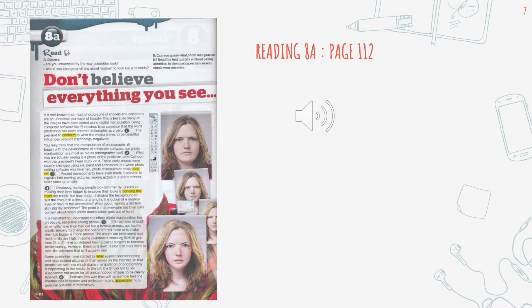Recent developments have even made it possible to digitally edit moving pictures, making actors in the scene thinner, taller, fatter, or smaller. Obviously, making people look slimmer by 10 kilos or making their eyes bigger to improve their looks is bending the truth too much. But how about changing the background to suit the color of a dress, or changing the color of a model's eyes or hair — is this acceptable? What about making a model's skin slightly smoother?